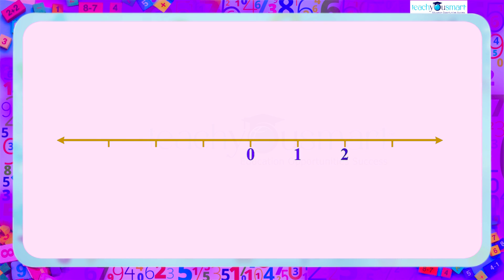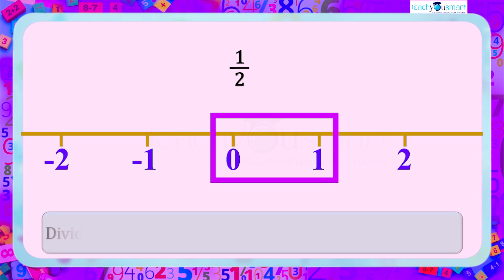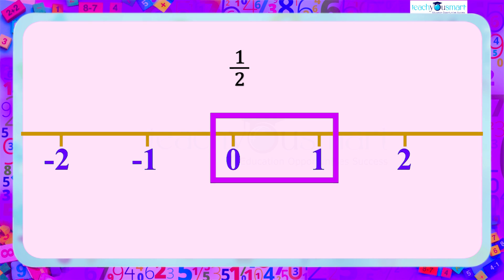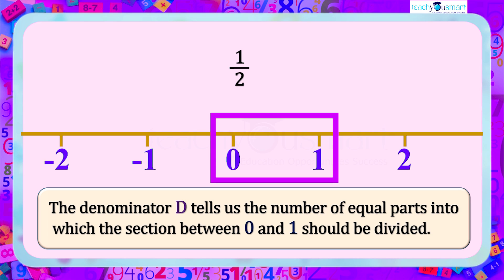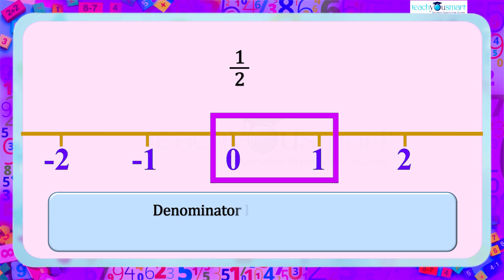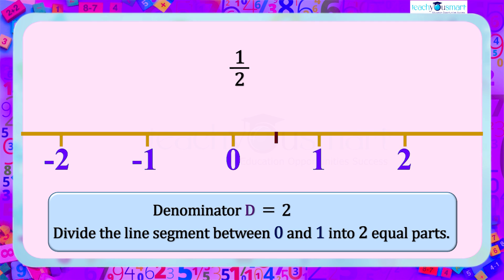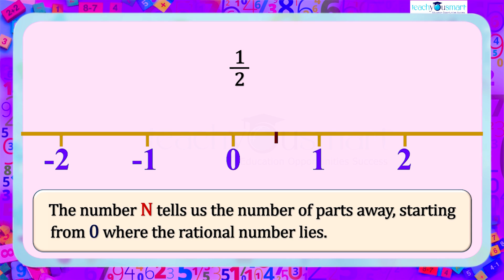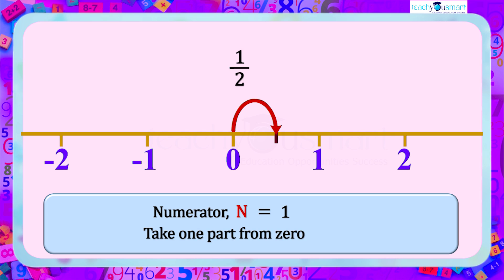Draw a number line. The number 1/2 lies between 0 and 1. Let's focus on the line segment between 0 and 1. Now we need to divide this line segment into equal parts. The denominator D tells us the number of equal parts — here D equals 2, so we divide the segment between 0 and 1 into 2 equal parts. The numerator N tells us the number of parts away from 0 where the rational number lies. Here N equals 1, so we take 1 part from 0 and mark 1/2 there.